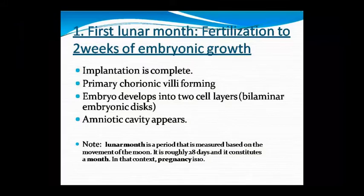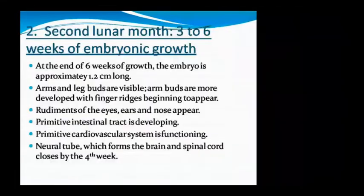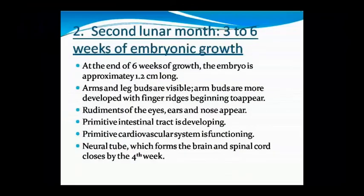Pregnancy-related development is calculated according to lunar months. In the second lunar month, covering weeks 4.5 to 6, embryonic growth occurs. By the end of the second lunar month, the embryo is approximately 1.2 centimeters in size.